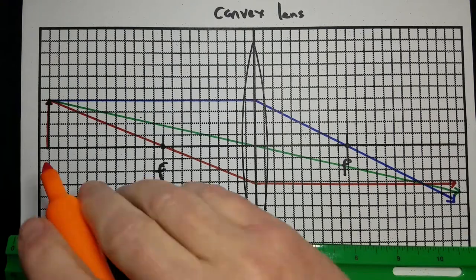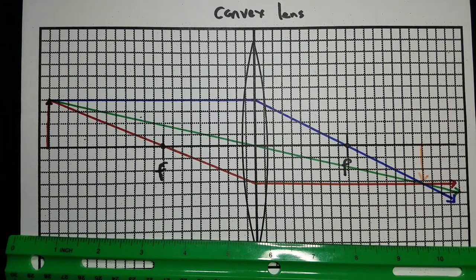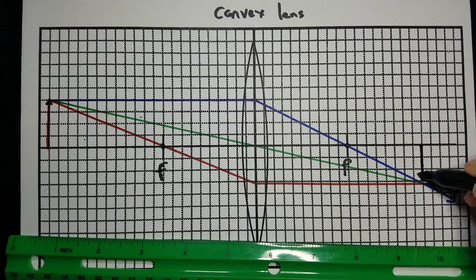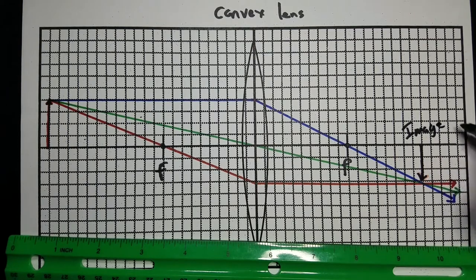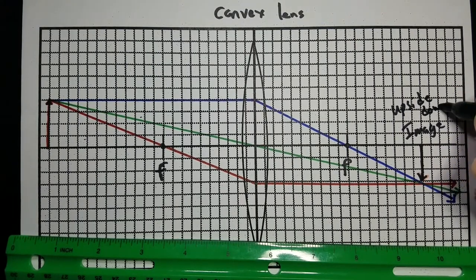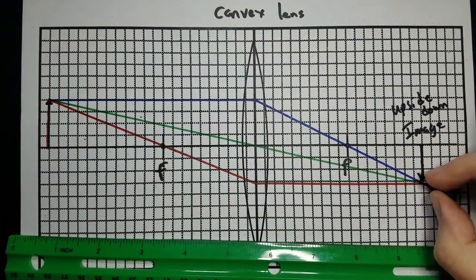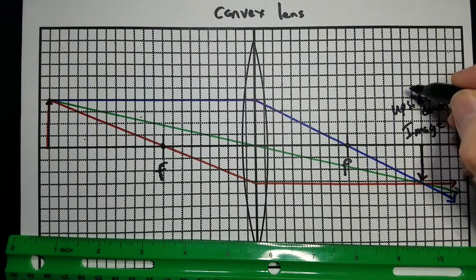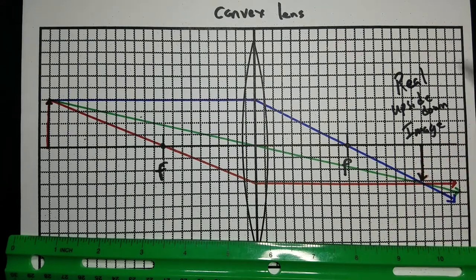The bottom is going to be on the principal axis, just like the bottom of the object was, and the image is going to be pointing down. Our image is upside down — in other words, inverted. Because these are actual light rays hitting here, and if actual light rays hit, we are going to get a real image that can be projected onto a screen for everybody to see, sort of like in a movie theater.